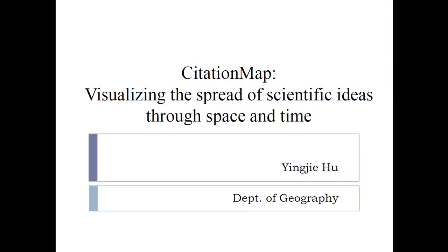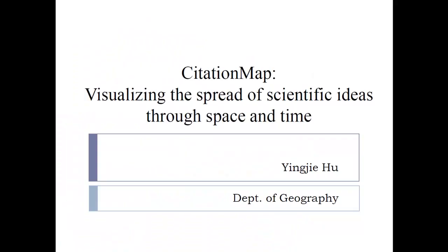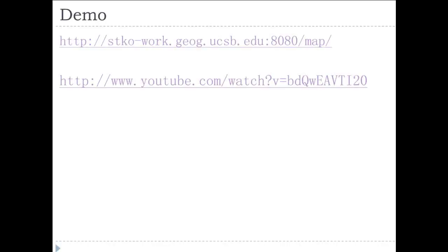Today I'm here to present the work from our group, which is called a Citation Map, used to visualize the spread of scientific ideas through space and time. Since we only have three minutes, we will directly go to the video.